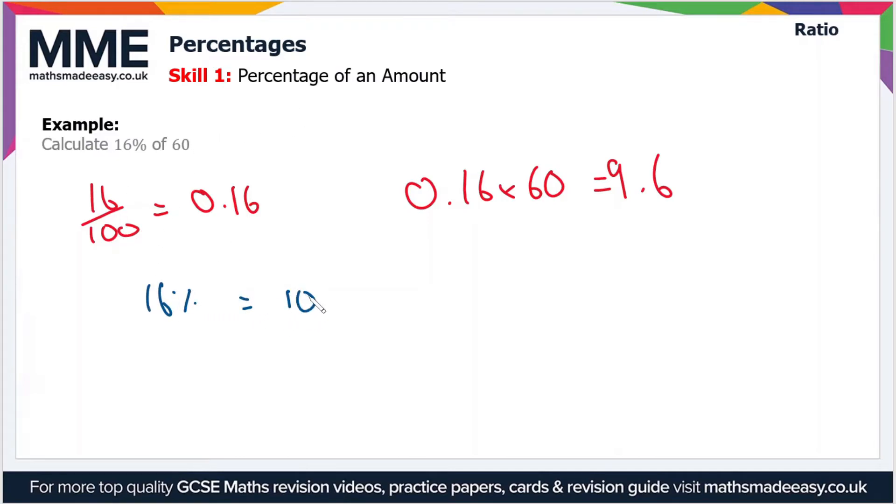So the easiest to get first of all is 10%. So to find 10% of any value you just divide it by 10. So 60 divided by 10 equals 6. So that's our 10%.